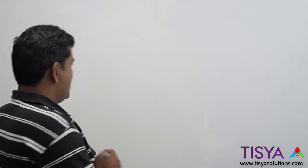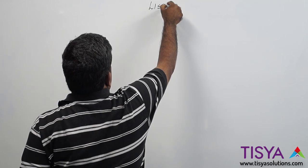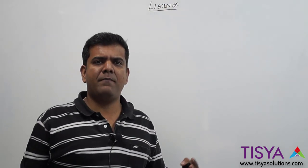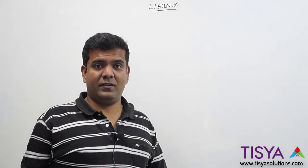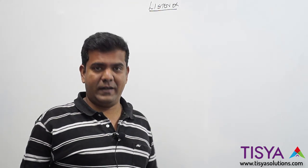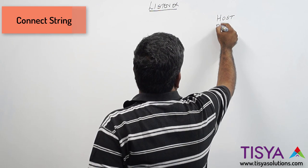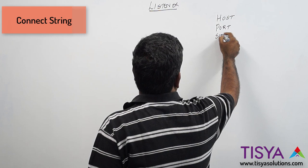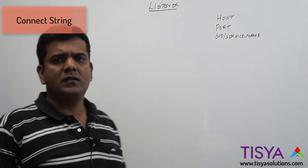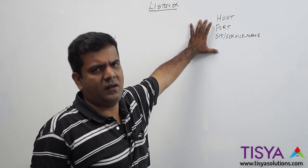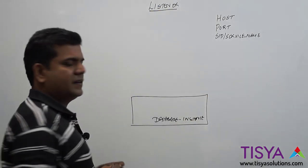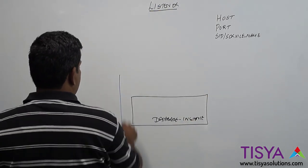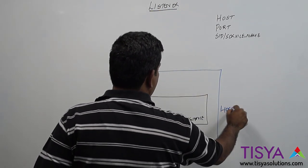In this video I'm going to help you understand about the listener. You may already be aware of SQL, and whenever you want to connect from SQL Plus or SQL Developer, or if you are a developer who connects from an application, you would have to give three important attributes to connect to a database: the host, port, and then SID or the service name. Let's try to demystify what these three are. To begin with, let's say there is a database instance that is available and assume it is running on a host.